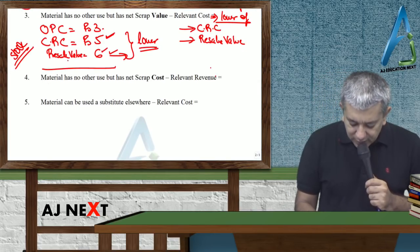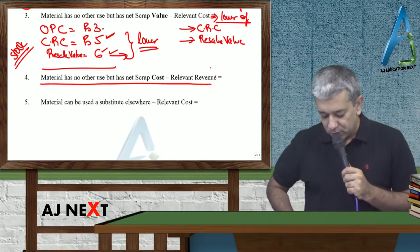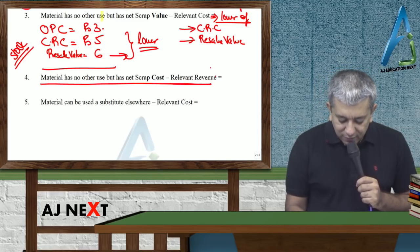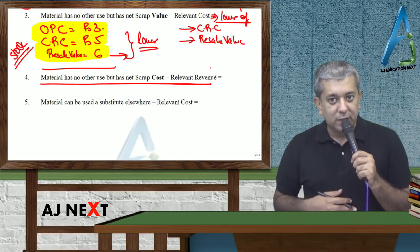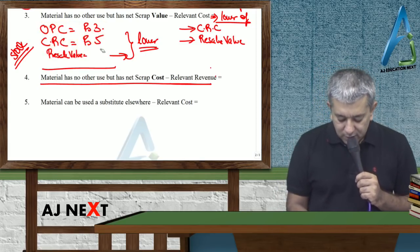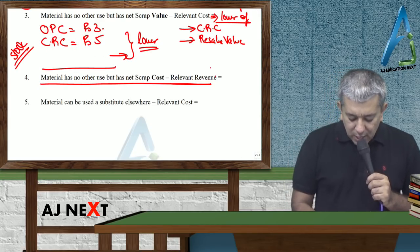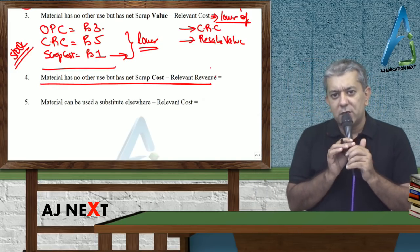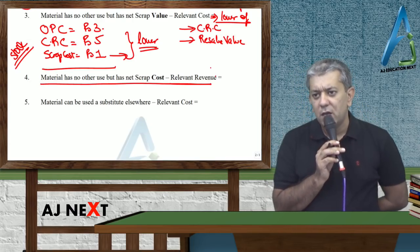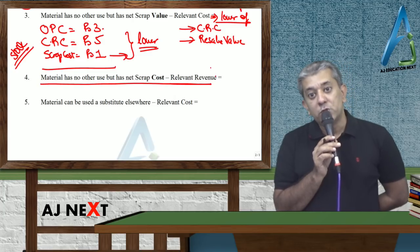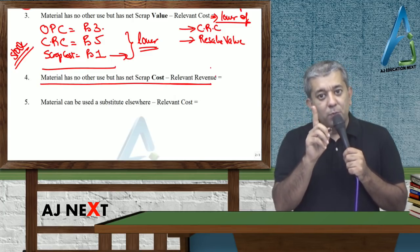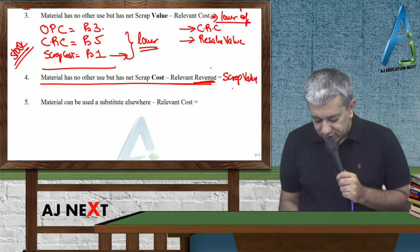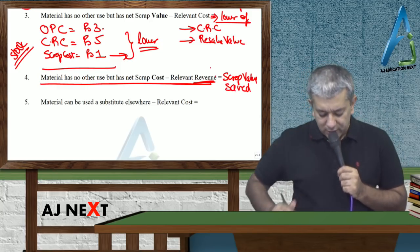Next, material has got no other use but has net scrap costs. In such cases think what will happen. I'm changing the numbers. Explaining with the same numbers. Material was bought for 3 rupees. Can buy more material for 5 rupees. If you sell the material you get nothing. Rather, selling the material costs 1 rupee. Think what will happen in such cases. Sir, if the offer doesn't come, we would spend 1 rupee to sell the material. Now don't sell it, use it. If you use it, that 1 rupee will be saved. So there will be no relevant cost, there will be relevant revenue. Relevant revenue will be to the extent of scrap value saved.